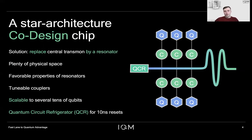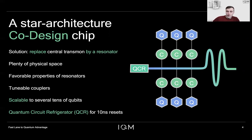In our design shown on the right, we have a lambda-over-4 resonator where the right side is shorted and the left side is left open, giving us a quarter-wave standing wave with the voltage maximum on the left side. To this voltage maximum, we capacitively couple qubits through tunable couplers. These qubits are transmons themselves, and the tunable couplers are also transmons that are highly flux tunable, so we can turn on and off the interactions between the qubit and the resonator, allowing us to choose which qubit-resonator pair to act on and avoid crosstalk issues.